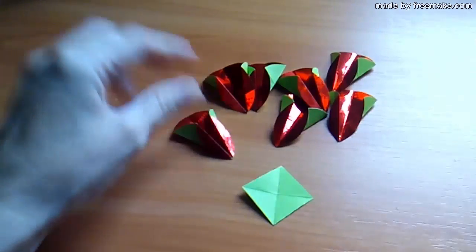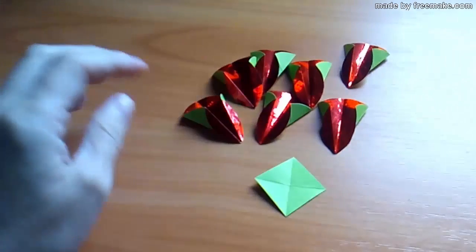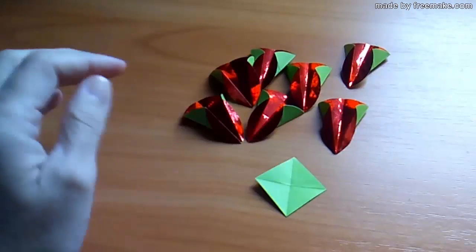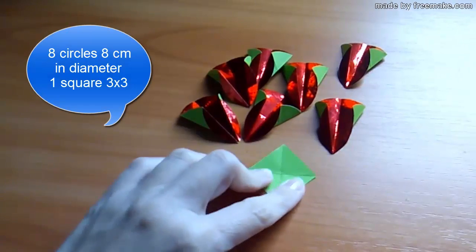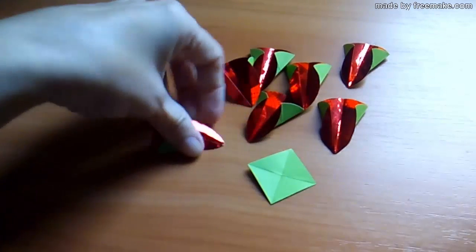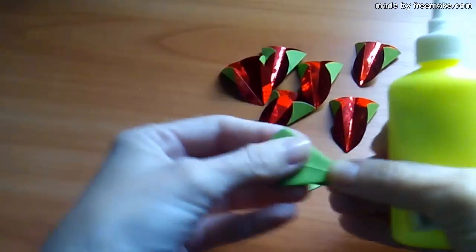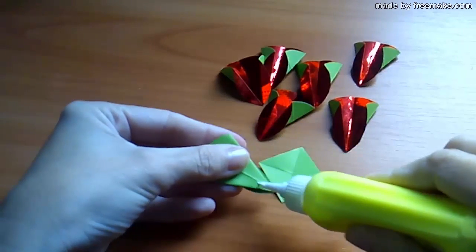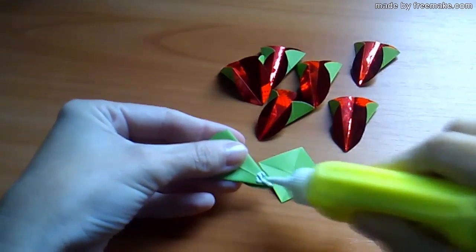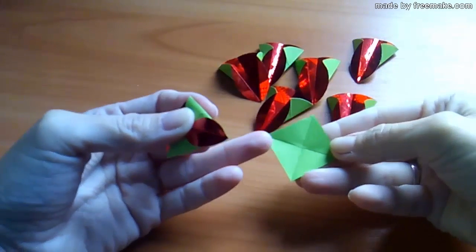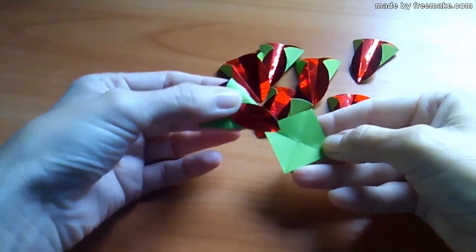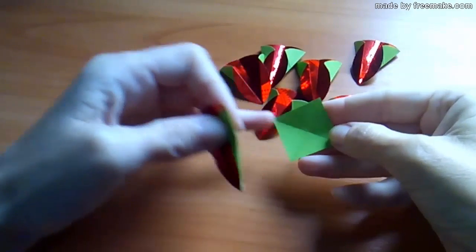For our flower we need 8 circles with a diameter of 5 cm and one square with a side length of 3 cm. And glue the petals on this square. Make a diagonal crease on the square. And glue the first petal on this line.